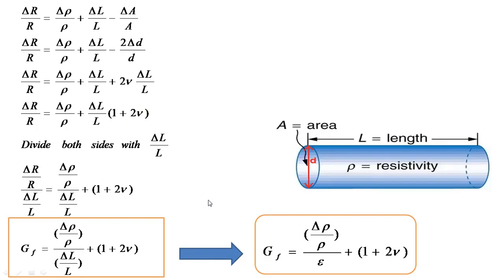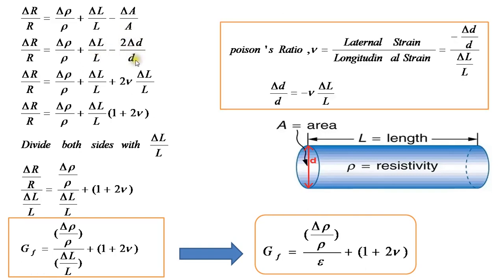Substituting δA/A = 2·δD/D into equation 1, we now express δD/D in terms of δL/L using Poisson's ratio. Poisson's ratio ν is defined as lateral strain divided by longitudinal strain, given by −(δD/D) / (δL/L). The negative sign indicates that when a material is stretched, the length increases while the diameter decreases. Therefore, δD/D = −ν·(δL/L).